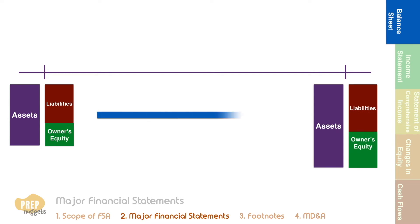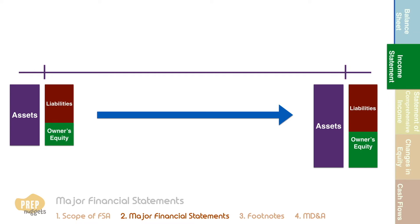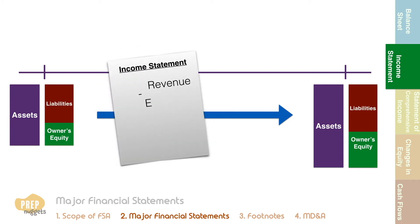How do we explain the changes in the balance sheets from one period to another? This is explained by the rest of the statements. One important statement that performs this role is the income statement, sometimes known as the profit and loss statement. The income statement accounts for the net income of the firm for that period.